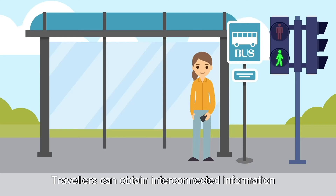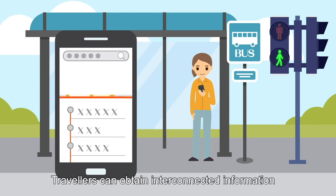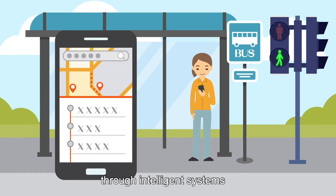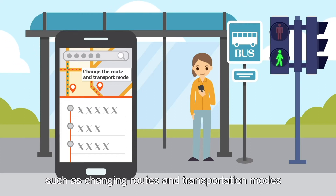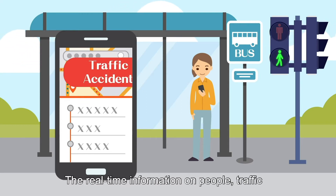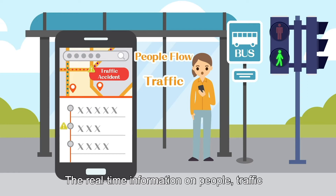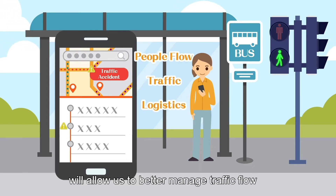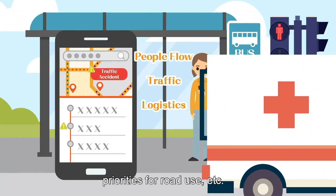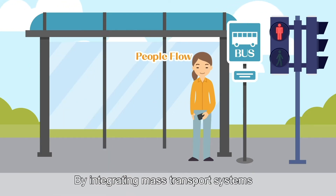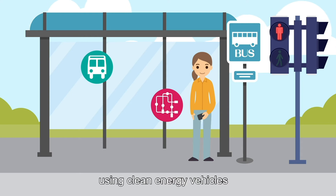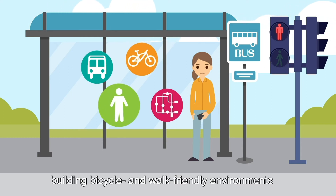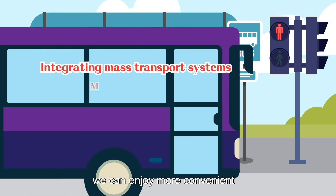Smart mobility: travelers can obtain interconnected information through intelligent systems to plan their journeys more effectively, such as changing routes and transportation modes. The real-time information on people, traffic, and logistics flow will allow us to better manage traffic flow, priorities for road use, etc.